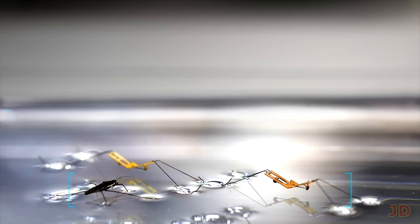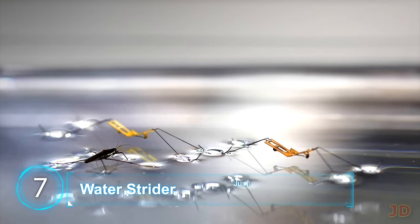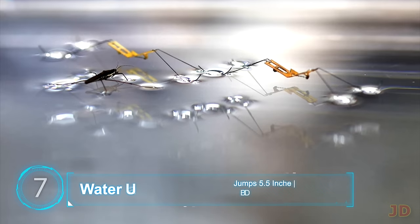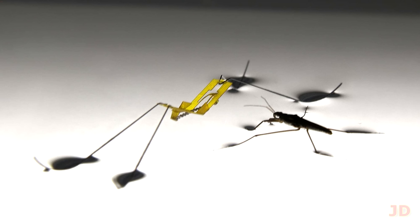At number 7, the Water Strider Bot. Many robotic versions have been developed around insects which can walk on water. But just recently, Seoul University has built a strider which can jump 6 inches off the surface of water and stay afloat. It weighs only 68mg and maximizes surface tension to mimic its real-life counterpart.